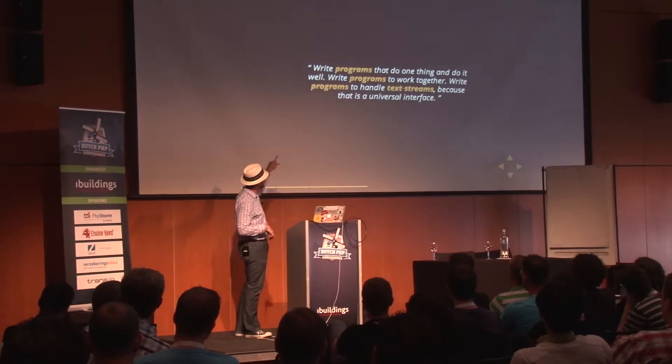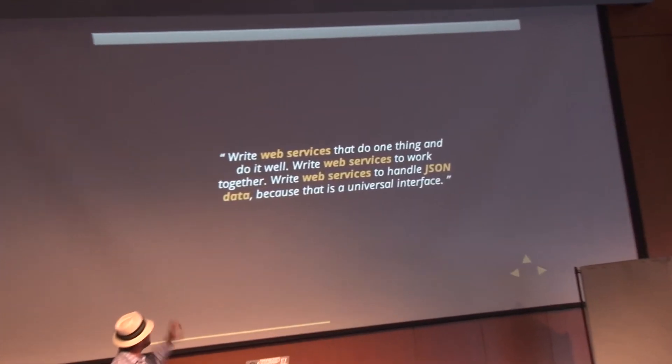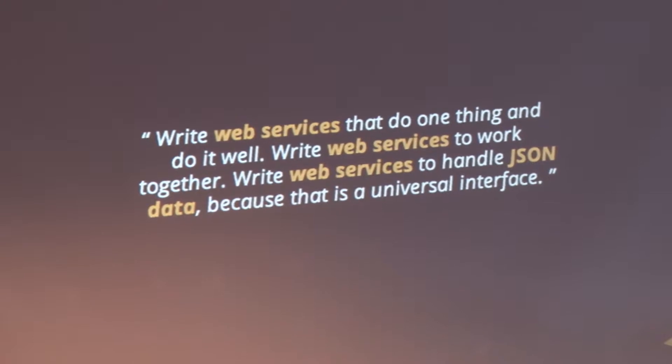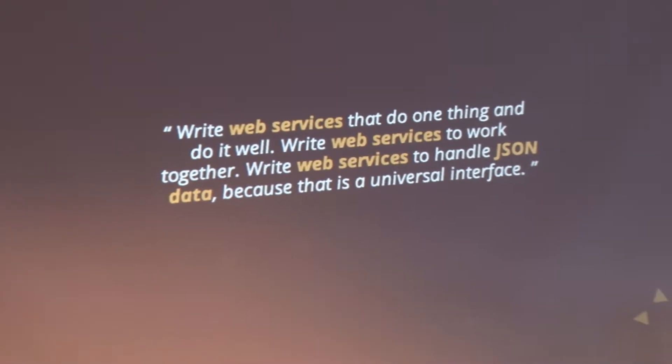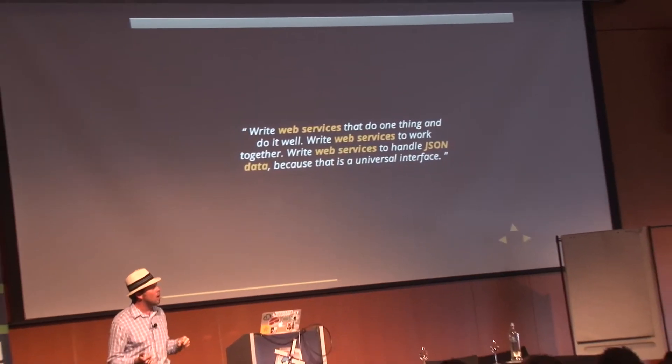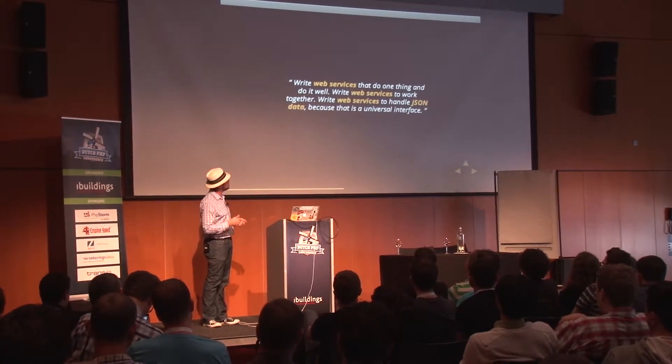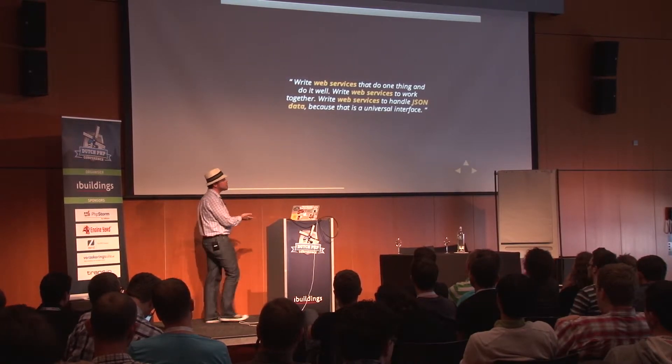If you take this and replace a few keywords — swap out programs for web services and text streams for JSON data — you can apply this to the web and how you should develop your server architecture. You want to write web services that do one thing and do it well, write web services that work well together, and write web services that handle JSON — or really just data, because it could be JSON, XML, or even HTML treated as markup. You need programs comprised of a bunch of really small, simple things.